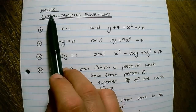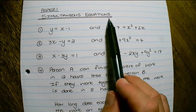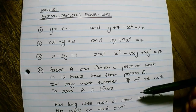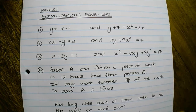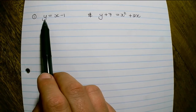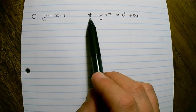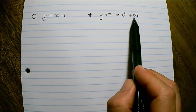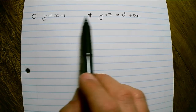We are going on with Paper 1 Revision and we are focusing on simultaneous equations. We will work through four examples that increase in difficulty. In our first example we have y equals x minus 1 and y plus 7 equals x squared plus 2x, and we want to solve x and y simultaneously.